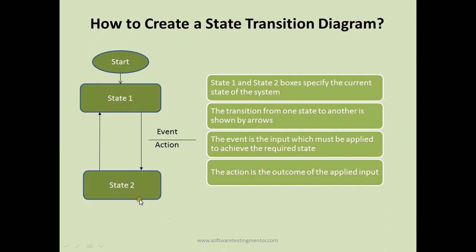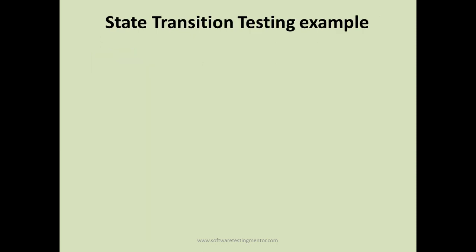So that's how you create a state transition diagram. You have certain states, you connect them using arrows, an event is the input applied to achieve the required state, and the action is the outcome of the applied input.